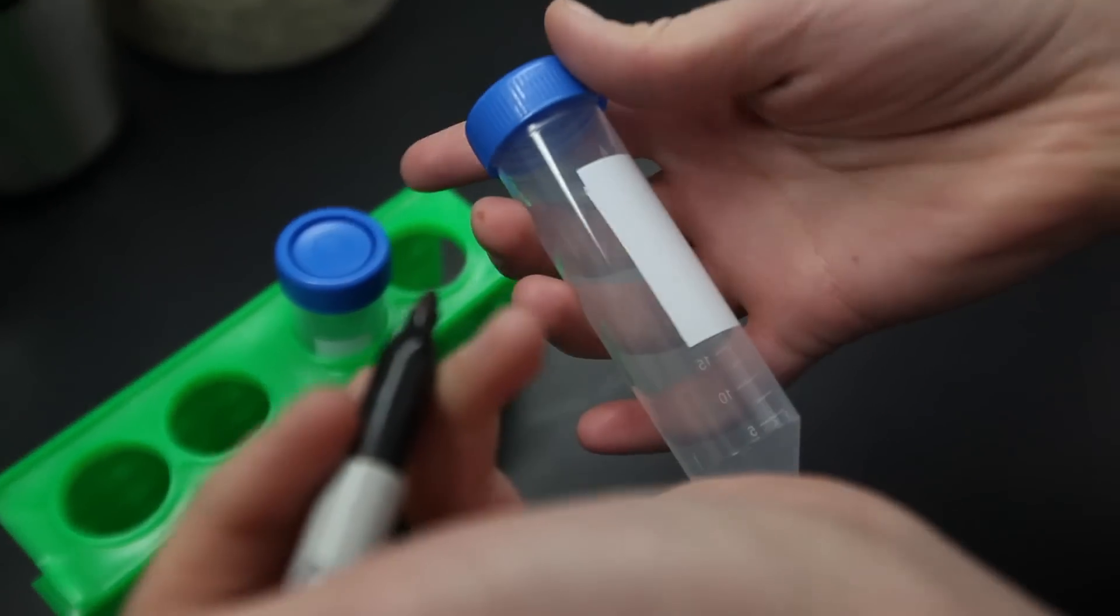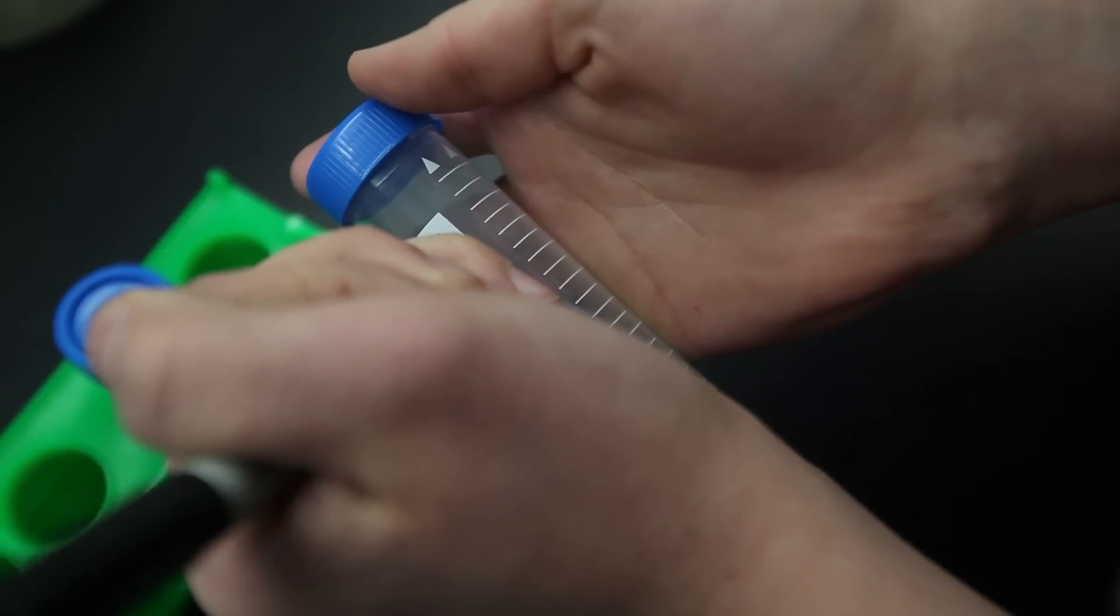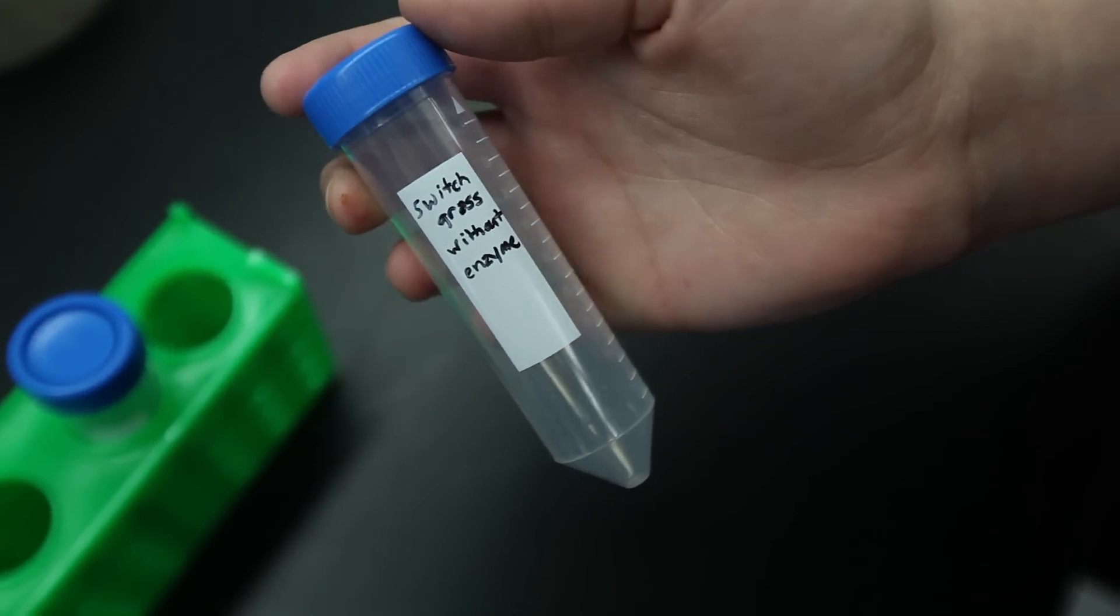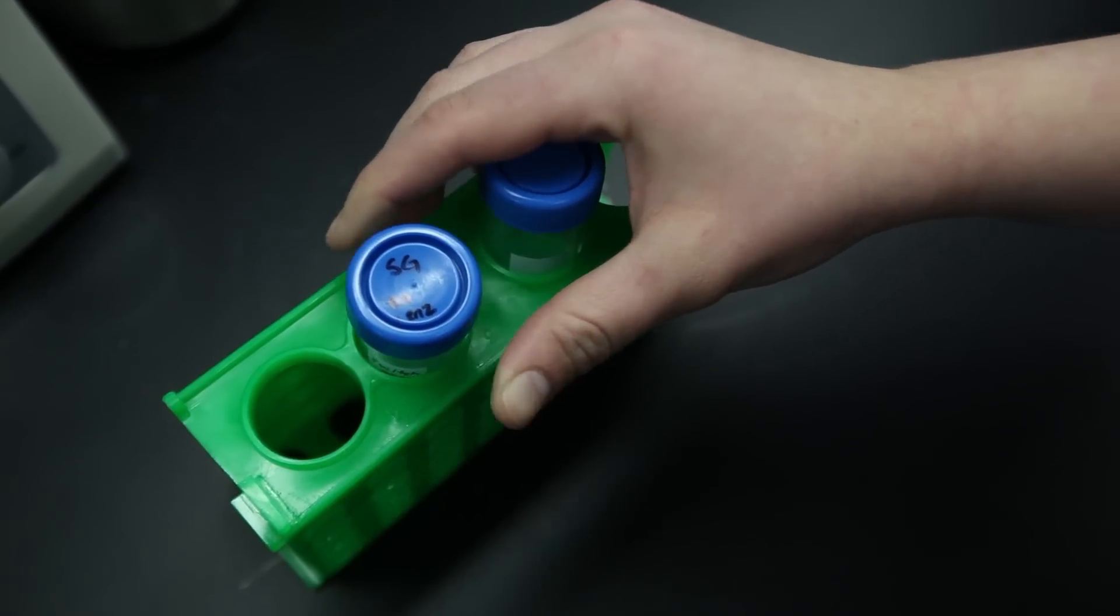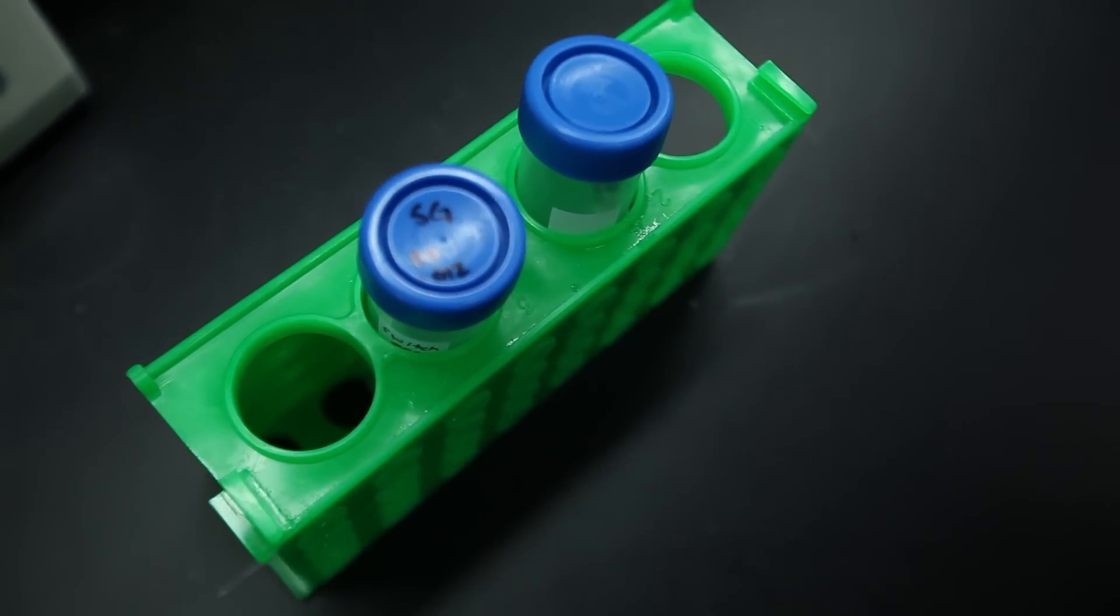When you have your samples sufficiently ground, you can prepare the test tubes. Before you put anything inside, it is first essential to label each tube with the biomass and pre-treatment information. Indicate this both on the tube and the cap.